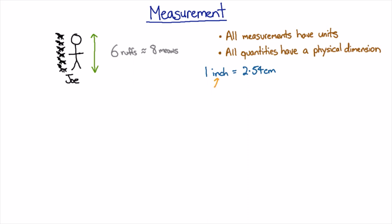The inch part is the unit, and the centimetre part is the unit, and the dimension is length. And this equation is alright because it has a length equal to a length. You can't have a length equal to a time. That just doesn't make any sense.